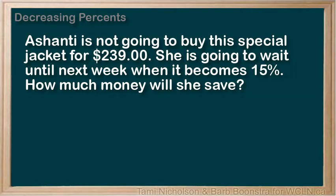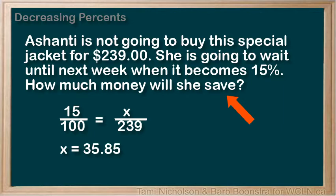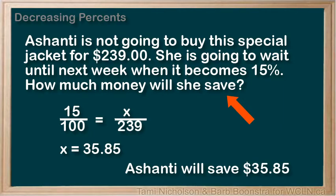We will change this example just slightly and see what we're looking for this time. Ashanti is not going to buy this special jacket for $239. She's going to wait until next week when it becomes 15% off. How much money will she save? We are wanting to know how much less money the new price is — so we want the decrease in price. What is 15% of $239? Substitute in the values and solve for the unknown. Our answer is $35.85. This is what she will save.